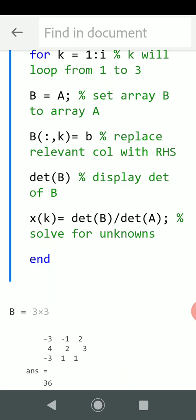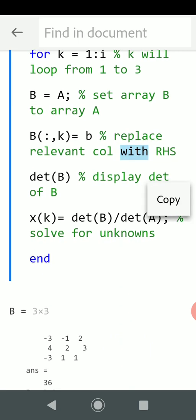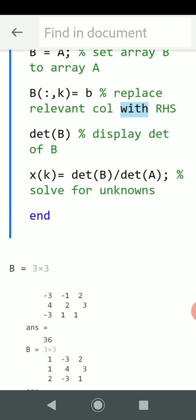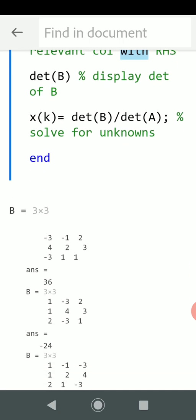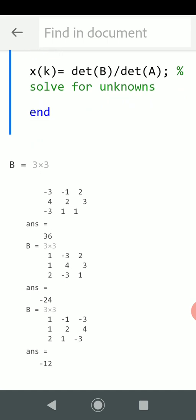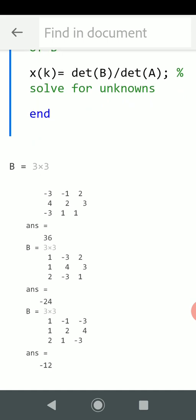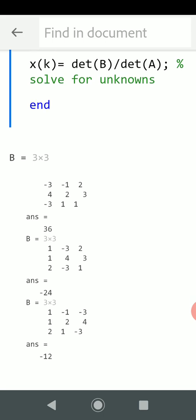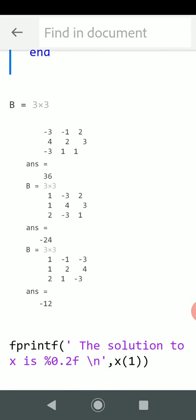And that's B round brackets colon k equals small b. I just said get that B and I left off the semicolon just to display it. So if we just look at that, there's the first B: -3, -1, 2; 4, 2, 3; -3, 1, 1. And the det of that is 36.